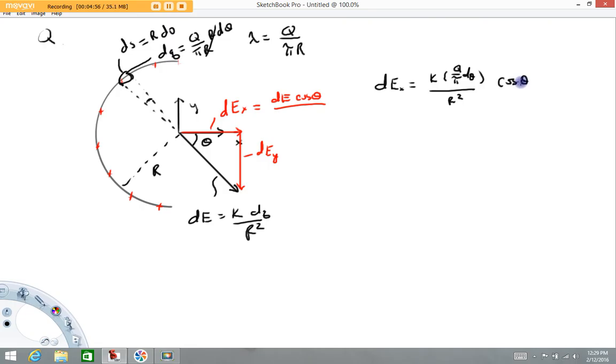The next step is to integrate this. Net field x direction equals the integral. I'm going to bring out constants: K, Q, pi, and R squared are constant. You have to remember that the integral is over theta. As theta changes, as this thing moves along the semicircle, the radius is not changing. So we have the integral cosine theta D theta.